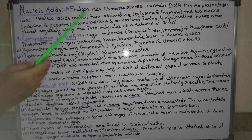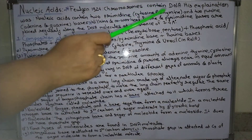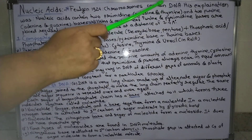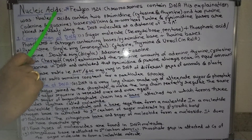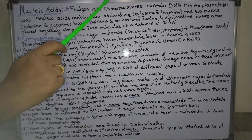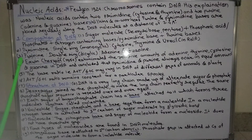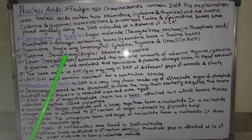Feulgen in 1924 showed that chromosomes contain DNA. His explanation was that nucleic acids contain two pyrimidines - cytosine and thymine - and two purines - adenine and guanine. So DNA has two pyrimidines (cytosine and thymine) and two purines (adenine and guanine) as bases.